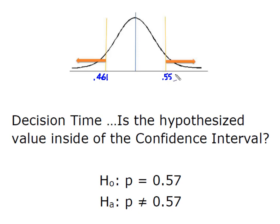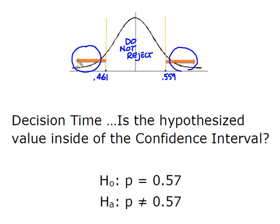Remember, when we're looking at a confidence interval approach, if the hypothesized value falls inside of the interval, then our decision will be do not reject — whatever is inside of the goal posts is good. But because this was a two-sided test, we have two different rejection regions beyond the interval, one at the top and one at the bottom. So I'm going to look at the hypothesized value of the proportion, which was 0.57, place that on my curve, and 0.57 falls outside of the 95% confidence interval.